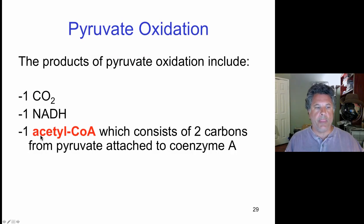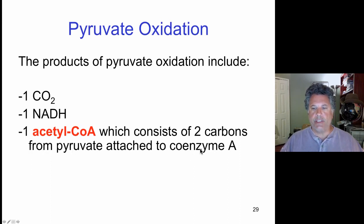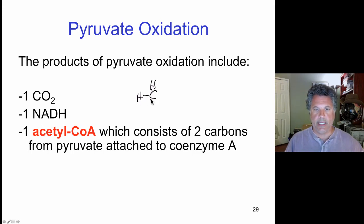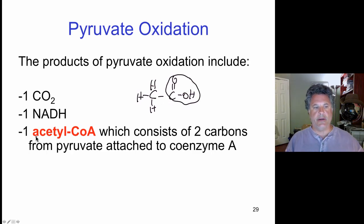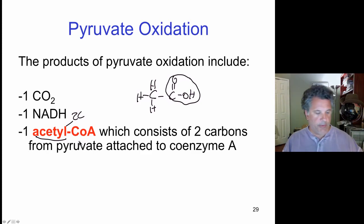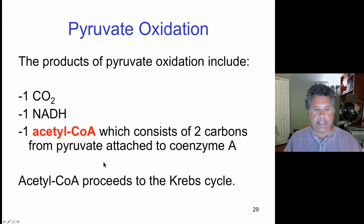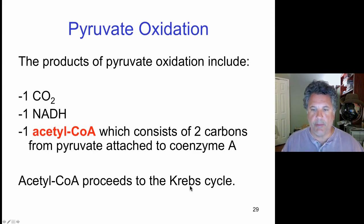The final product of pyruvate oxidation is one molecule of acetyl coenzyme A. Acetyl coenzyme A has two carbons that come from pyruvate — one carbon is lost as carbon dioxide, and two carbons from pyruvate are attached to coenzyme A. We call that resulting compound acetyl coenzyme A. 'Acetyl' implies acetate — acetic acid is a small hydrocarbon — so whenever you see 'acetyl,' think of a 2-carbon situation. We have two carbons attached to coenzyme A at that sulfur atom.